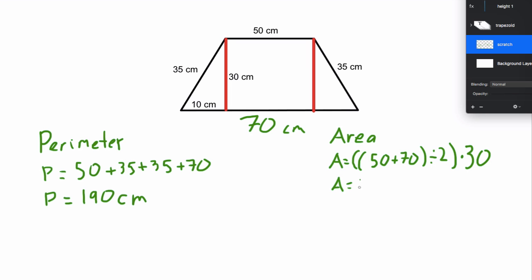Let me work it out here. Almost forgot my parentheses. So 120 divided by two times 30. I got that 120 by adding 50 and 70 together. 120 divided by two gives me 60 times 30, and so my area is 1,800 centimeters squared.